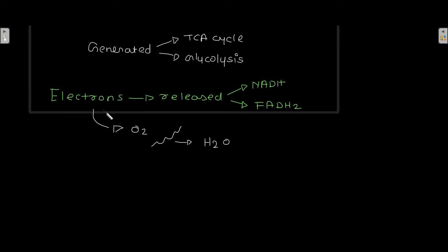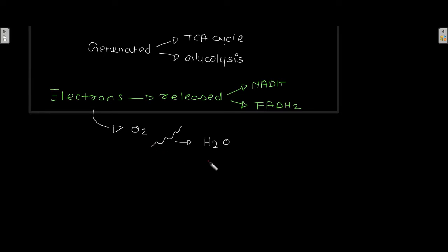The electrons which are released from NADH and FADH2 are transferred to oxygen, which results in the formation of water. So the electrons from NADH and FADH2 go to oxygen, and when oxygen gets the electrons, that results in the formation of water.